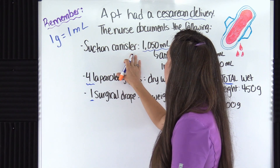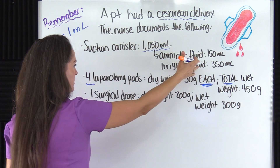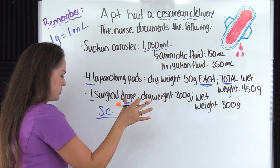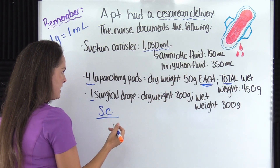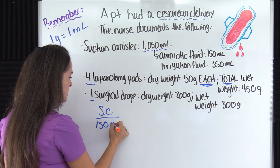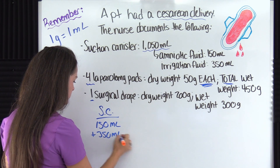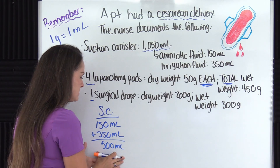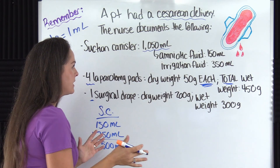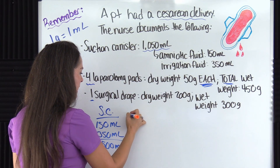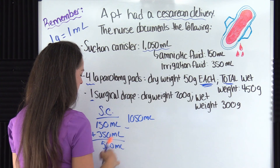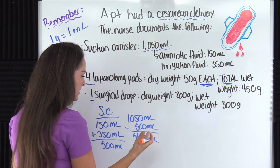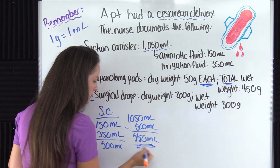Let's deal with the suction canister first. We have a total of 1,050 milliliters. First, let's add the amniotic fluid and irrigation fluid together: 150 milliliters plus 350 milliliters equals 500 milliliters. That's how much of the fluid is non-blood. So we subtract: 1,050 minus 500 gives us 550 milliliters of estimated blood that's in that canister. That's an important number — I'll underline it so we keep track.